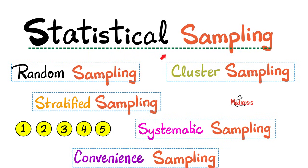In previous videos, we talked about the population, the sample, the parameter, and the statistic. We discussed the different types of variables, such as dependent and independent variables, quantitative versus qualitative variables, numerical versus categorical variables, continuous, discrete, nominal, and ordinal variables.